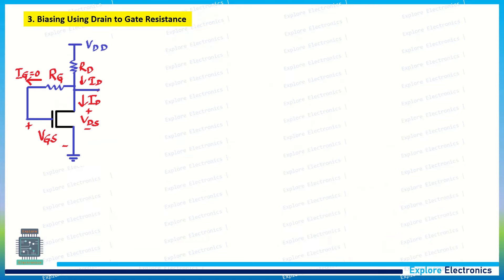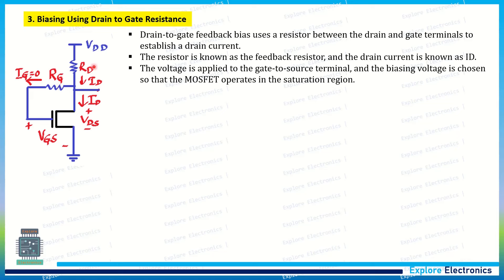In the biasing using drain-to-gate resistance, we have a resistance RG connected between the drain and the gate terminal of the MOSFET. This RG acts as a feedback resistance. We have VDD, a drain resistance RD through which the current ID flows, and there is a voltage at drain-to-source called VDS.